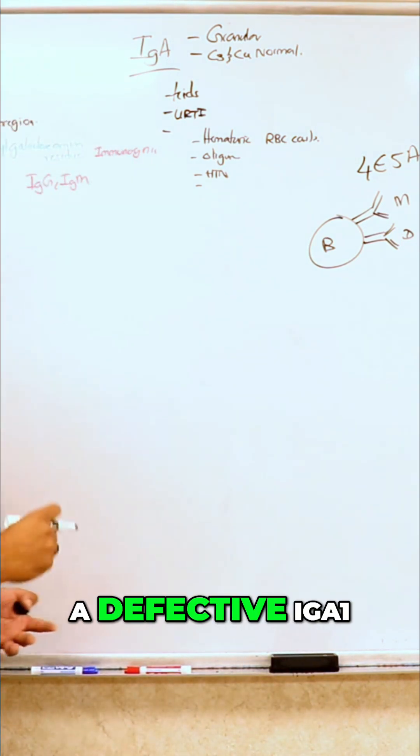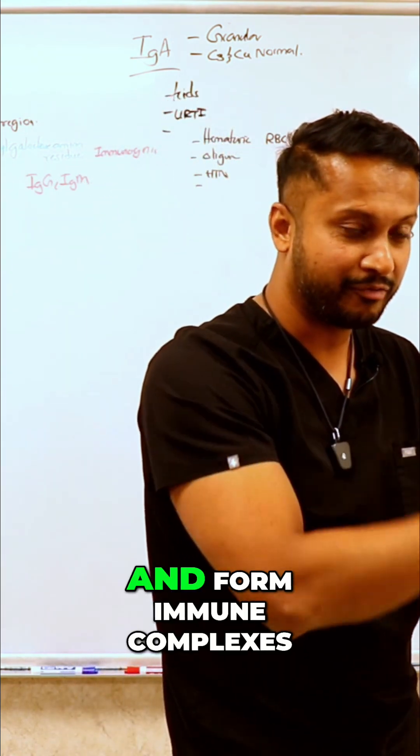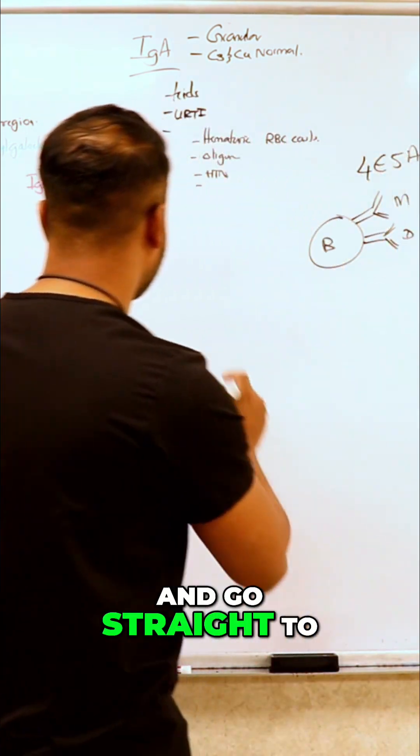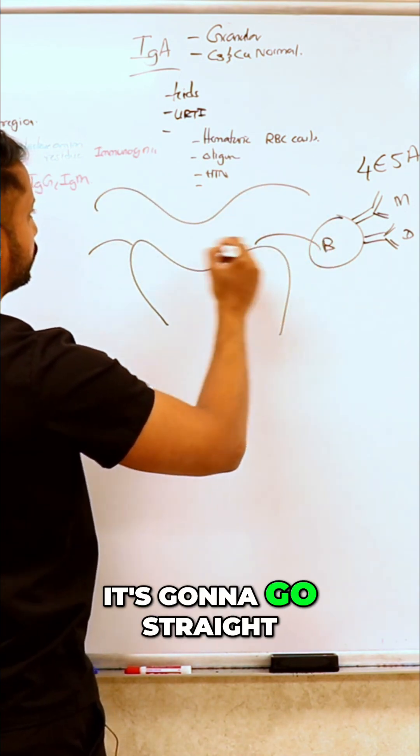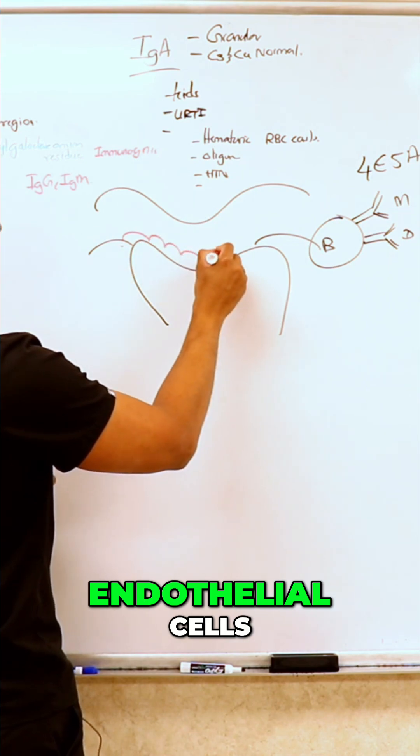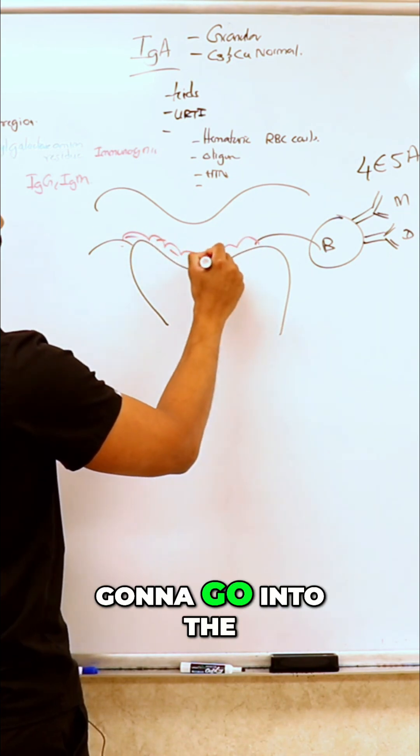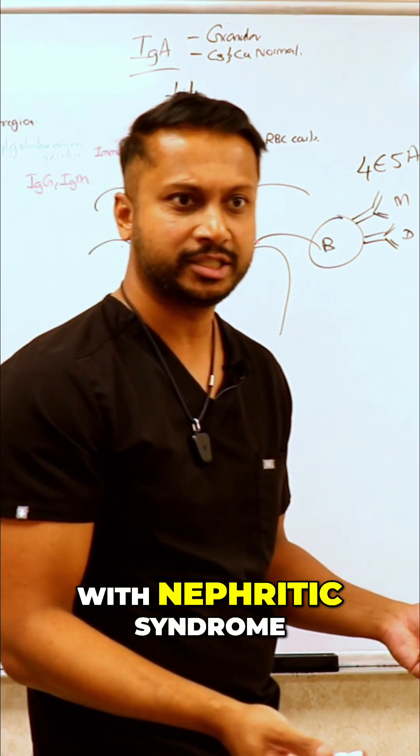But you will produce a defective IgA, which now your body is going to go attack that and form immune complexes. And it's going to go straight to your kidney, into the endothelial cells, and cause damage there. And you will end up with nephritic syndrome.